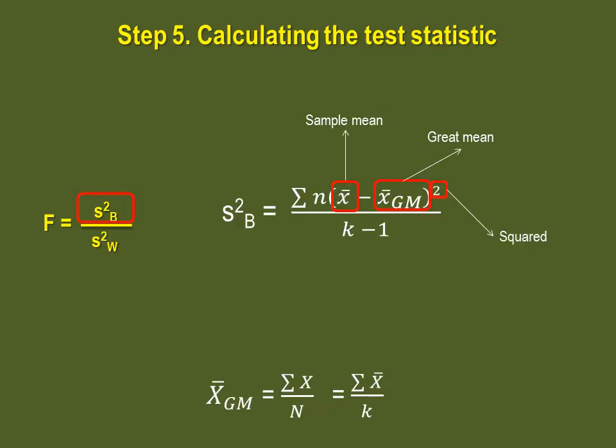Back to our numerator equation. Once you have subtracted the grand mean from the sample mean, square the result. Multiply the squared result by that sample's n. Repeat this for all of the sample means and then add those results together. In our example, we would have 3 results to add. Once you have the sum, divide it by the number of samples minus 1.